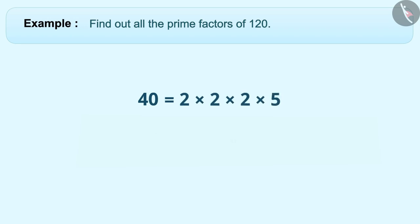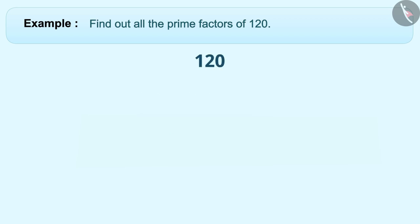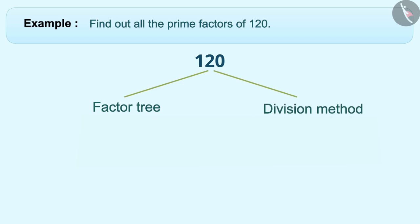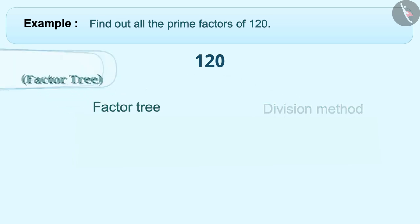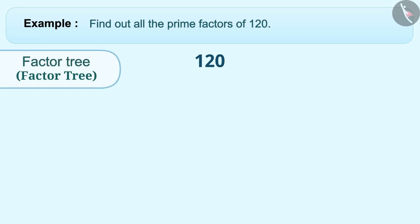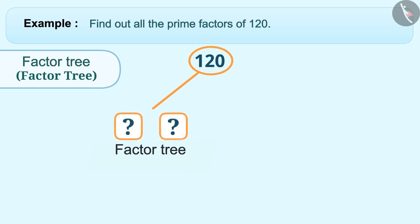Next example: find out all the prime factors of 120. Prime factorization is the method of expressing any number into its prime factors. To do the prime factorization of 120, we can choose either the factor tree or division method. Let's use the factor tree method. First, we will find a factor pair of 120 whose product is 120.